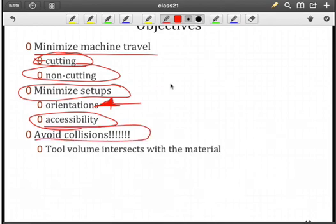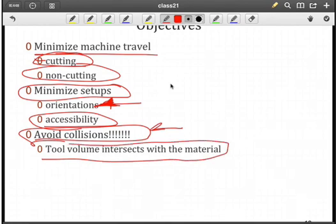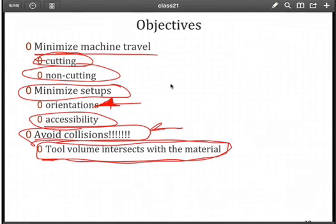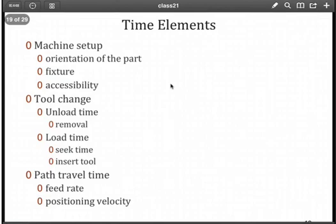The constraint here is avoid collisions - collisions with fixtures, collisions with other features we've already created on the workpiece. Think of the tool volume based upon the shape, such as the end mill, intersecting with the material. That can cause a collision, and that's to be avoided because that usually ends up with broken tools or damage to the workpiece.